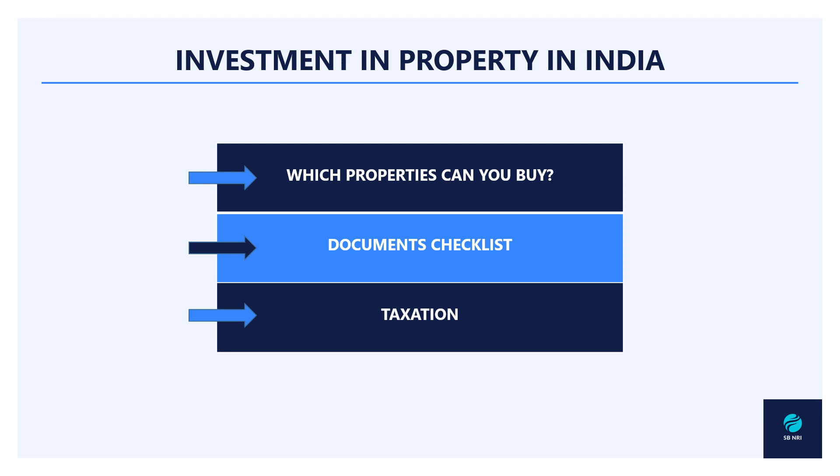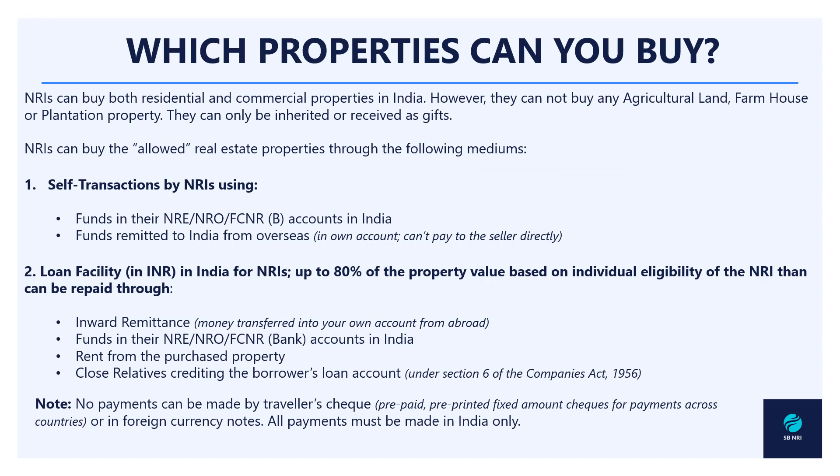We will cover the basic aspect of which properties you can buy in India, then discuss the documents required, and by the end of the video we will understand the taxation aspect. An NRI can buy both residential and commercial property in India; however, they cannot buy any agricultural land, farmhouse, or plantation property. These properties can only be inherited or received as gifts.